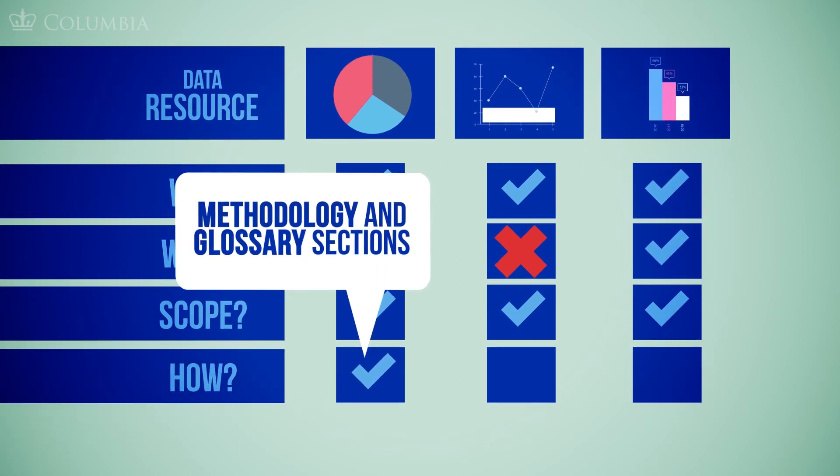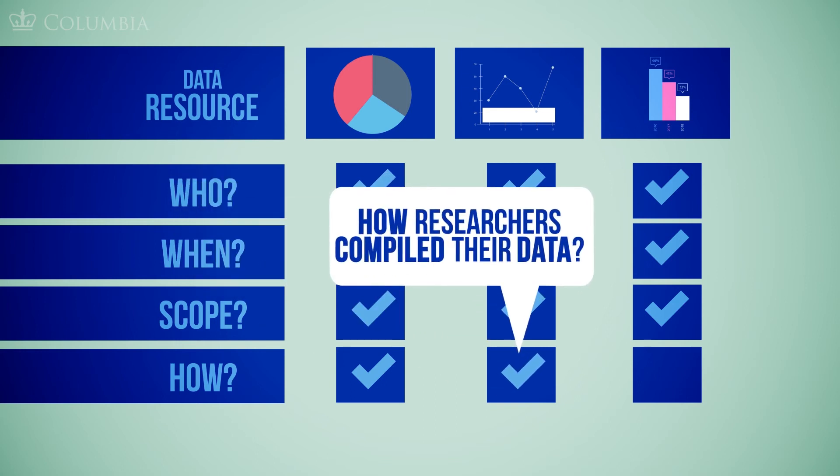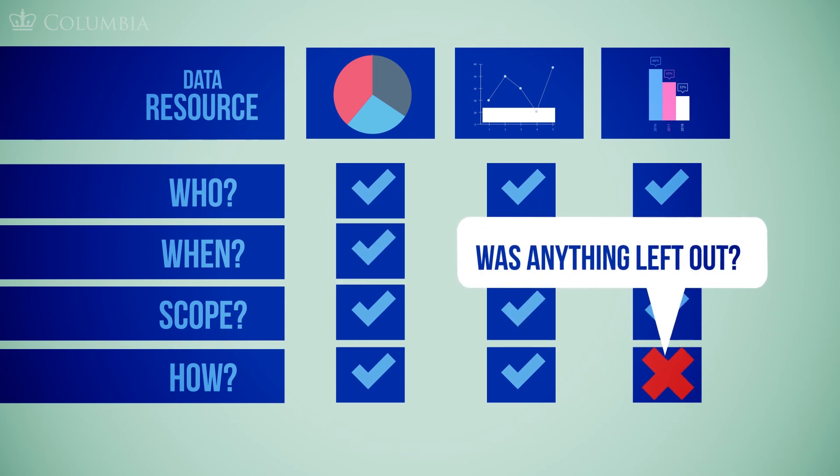Read the methodology and glossary sections of a data set to decipher how the researchers compiled their data and how it's intended to be read. What questions didn't they ask? Was anything left out that you feel is important? Look for additional data sets or alternative sources to fill in the gaps.